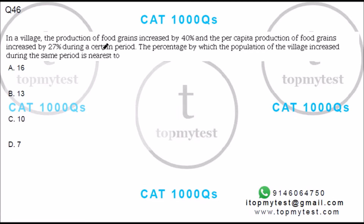In a village, production of food grains increased by 40% and per capita production of food grains increased by 27% during a certain period. The percentage by which the population of the village increased during the same period is how much?